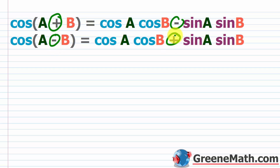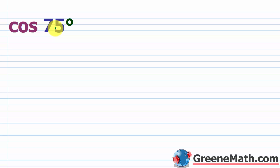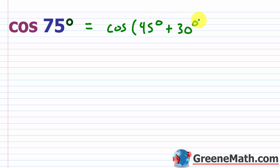Let's start with a simple example: finding the exact value of cosine of 75 degrees. The way to do this is to break 75 degrees into two angles that are on the unit circle, where you know the cosine values. One way is 45 degrees and 30 degrees.